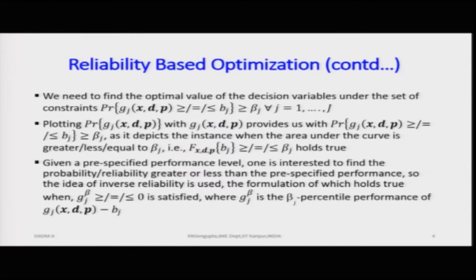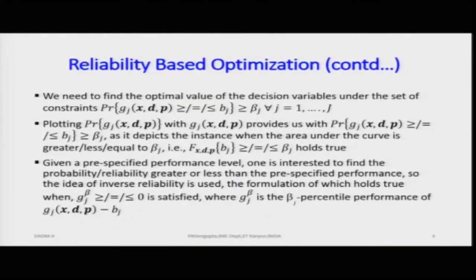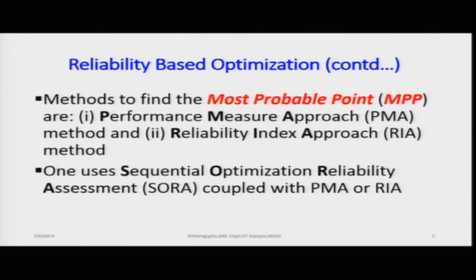To find the reliable solution there are two methods: the Performance Measure Approach (PMA) and the Reliability Index Approach (RIA). Intuitively both are the same — they seek the most probable point. One approach finds the performance measure at a given reliability; the other finds the reliability index for a given performance level.